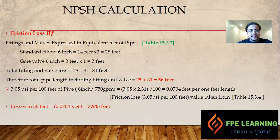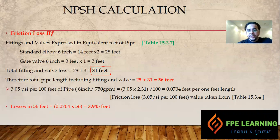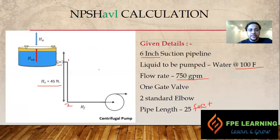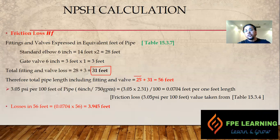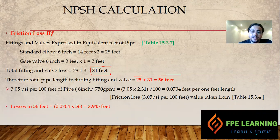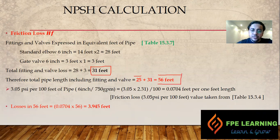We have 31 feet of equivalent length just from two elbows and one gate valve. Adding the actual pipe length of 25 feet from the problem, the total combined equivalent pipe length is 56 feet. Just two elbows and one gate valve have a significant impact on pressure loss — the fittings alone add 31 feet of equivalent length.